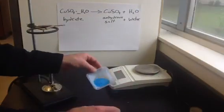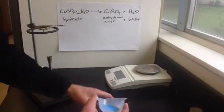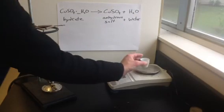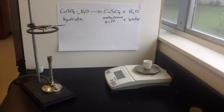Now we'll take a sample of the copper sulfate hydrate, put it into our crucible and put that on our balance. We find out that the mass of the hydrate is 30.52 grams.